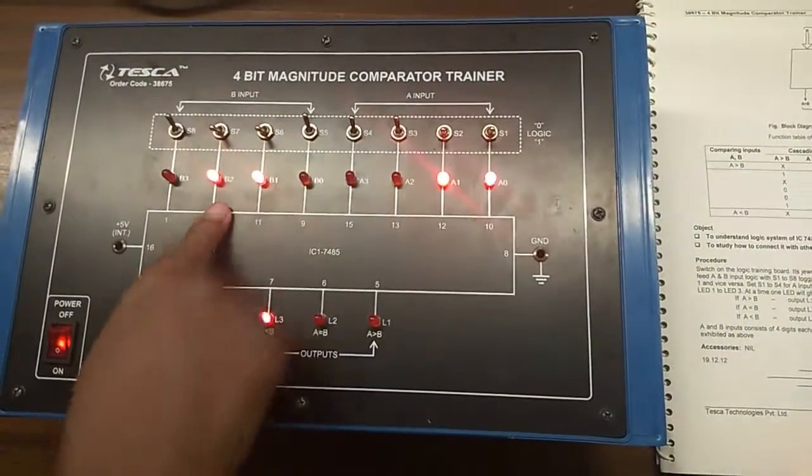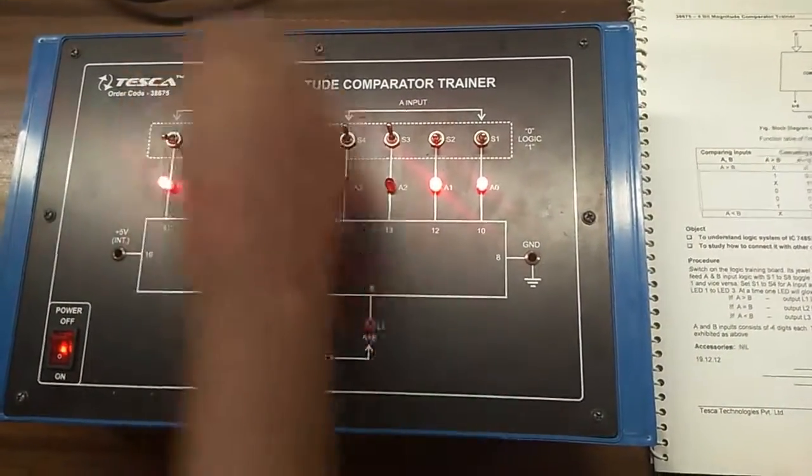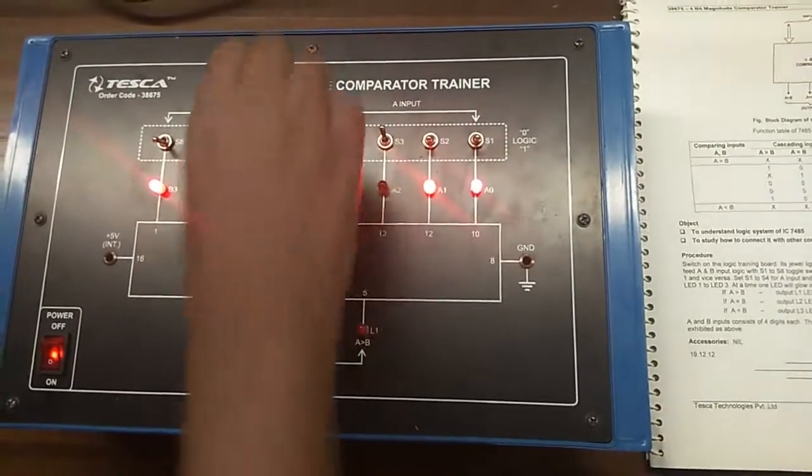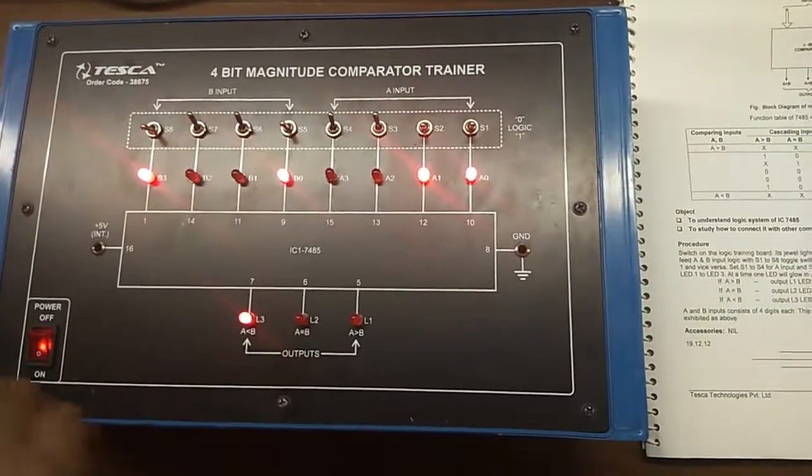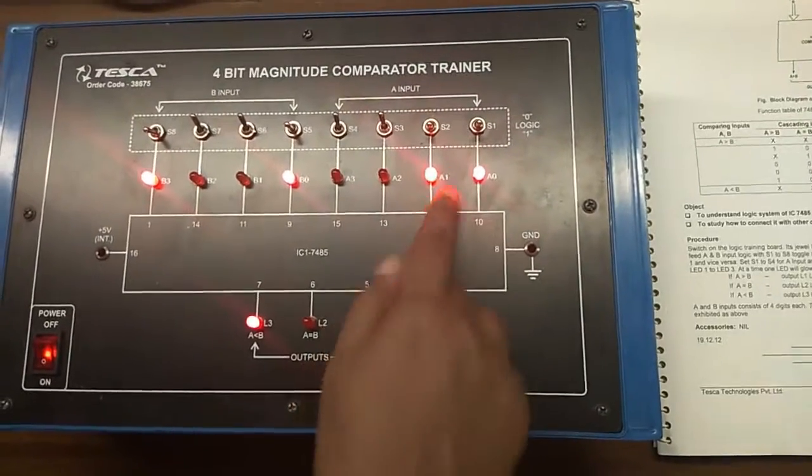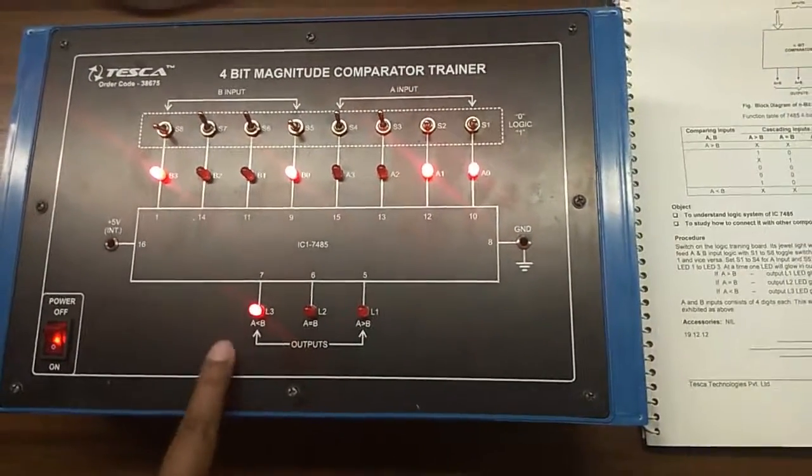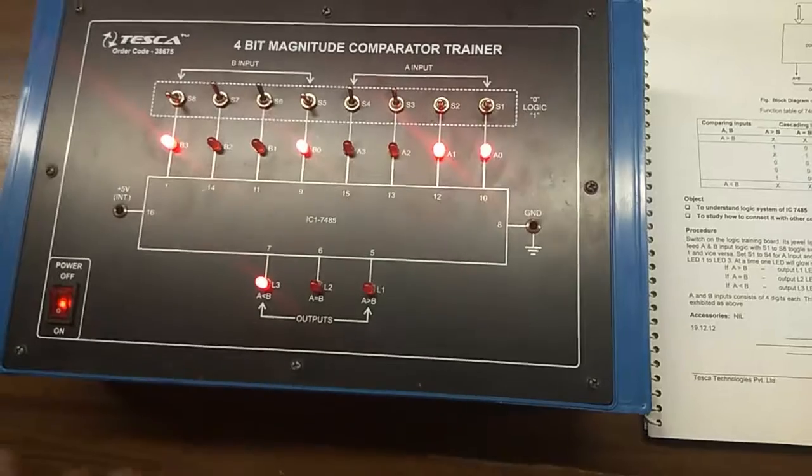Now I'm giving 1001, which is 9, and my other input is 3. It's indicating A less than B.